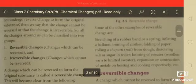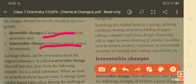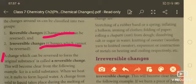Reversible changes: the changes which can be reversed. A change which can be reversed to form the original substance is called a reversible change, like glowing of a bulb.